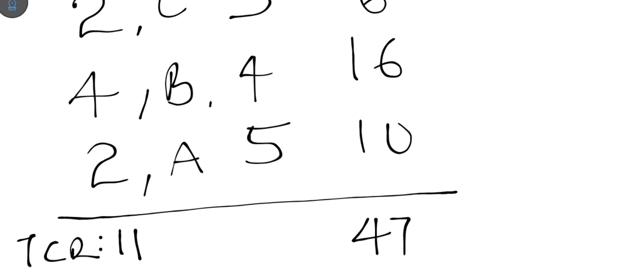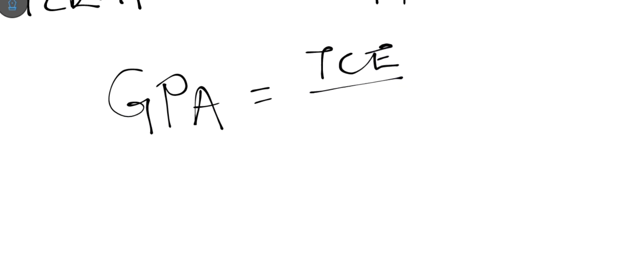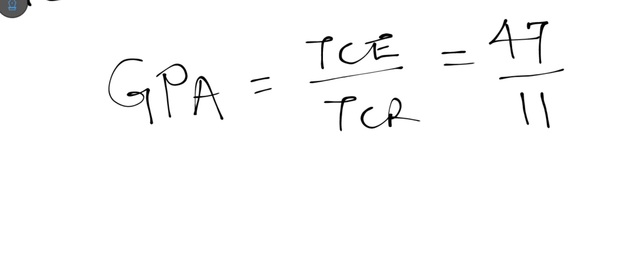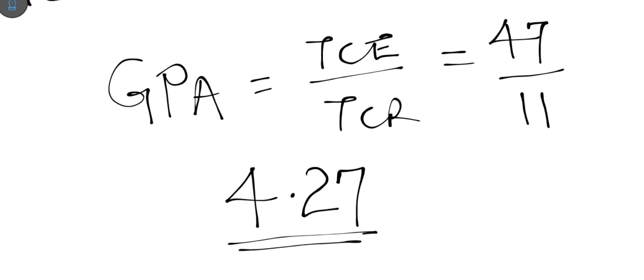GPA is simply calculated as TCE divided by TCR, which in this scenario is 47 ÷ 11. Entering this in your calculator gives 4.27 to two decimal places. GPA and CGPA are generally expressed to two decimal places.